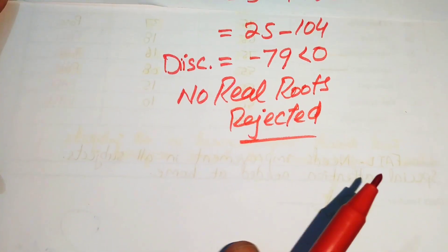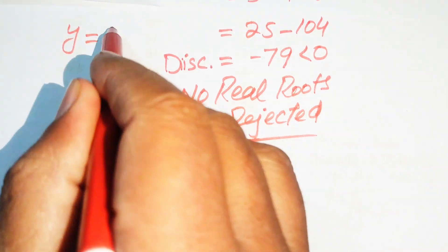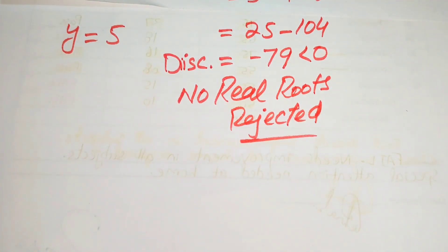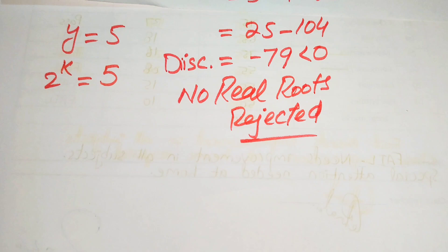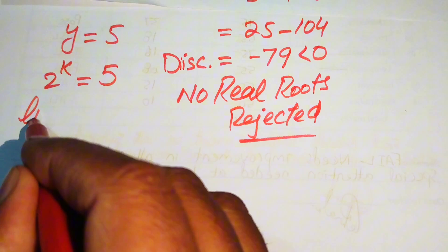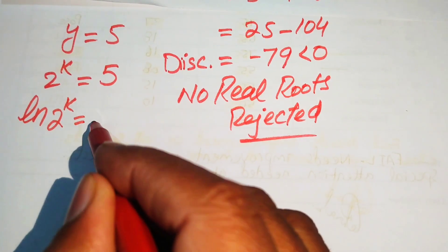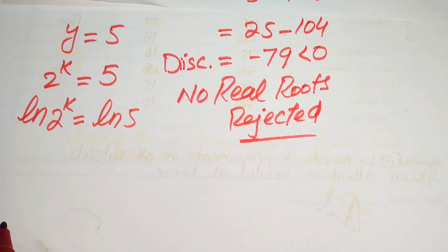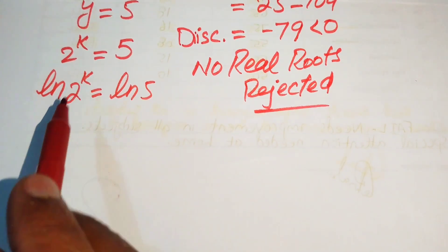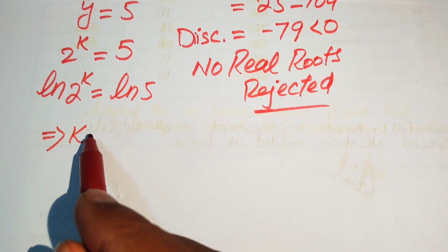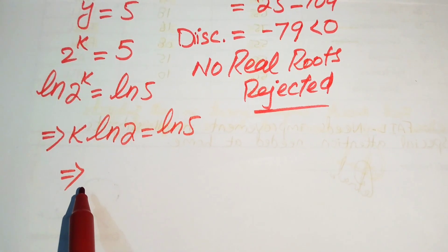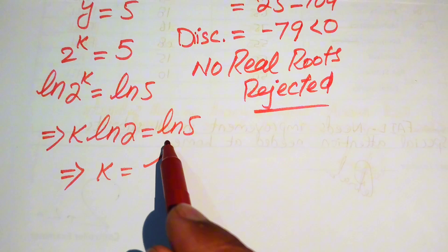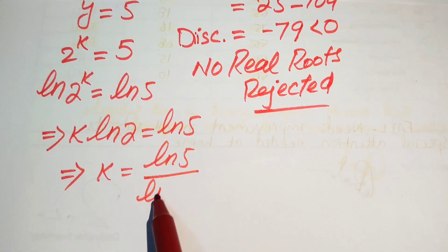We proceed with only y equals 5. Back-substituting, since y equals 2 to the power of k, we have 2 to the power of k equals 5. To find the value of k, we take the natural log on both sides, giving ln(2^k) equals ln(5). Applying the log exponent property, we move k to the front: k times ln 2 equals ln 5. This implies k equals log 5 divided by log 2.